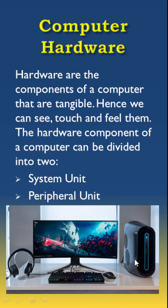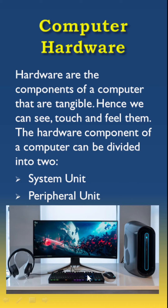All other parts of a computer except the system units are the peripheral units. So the monitor, the keyboard, the mouse, speaker, printer, and scanner — they are all the peripheral units of the hardware components of a computer.